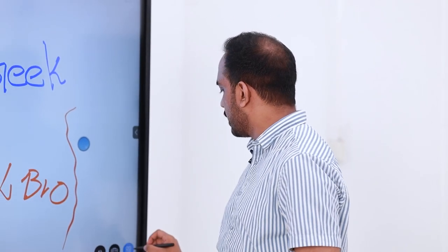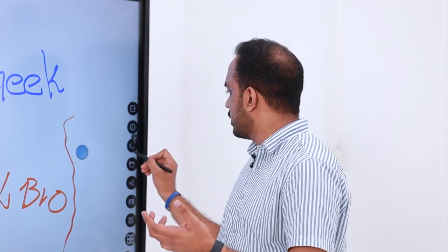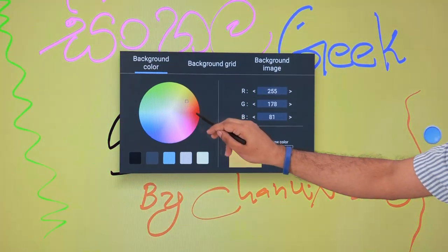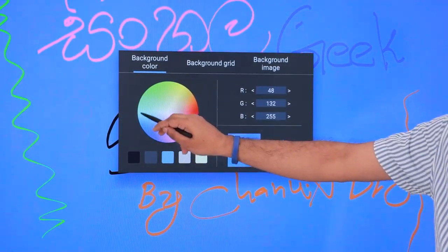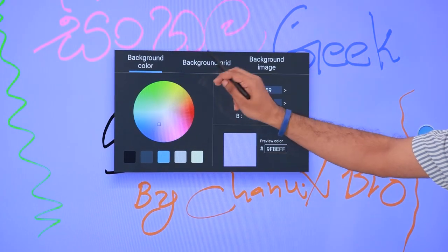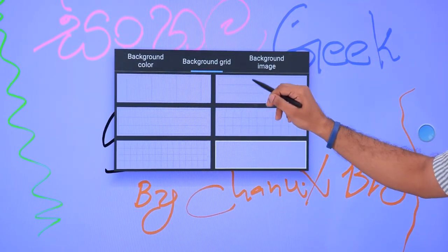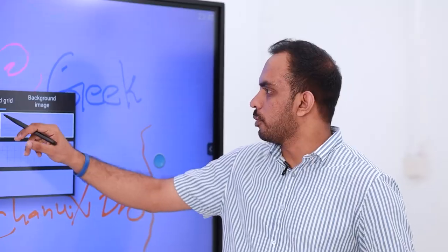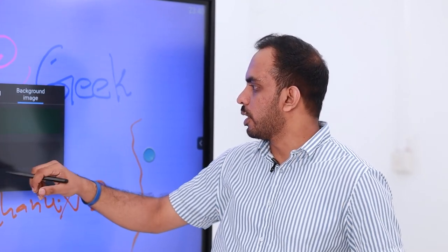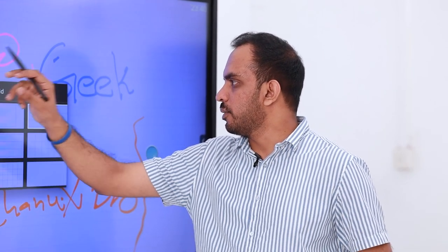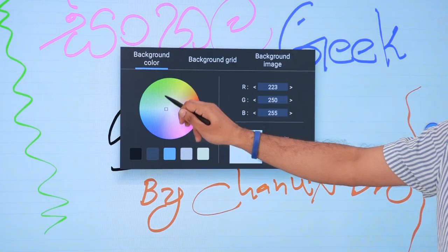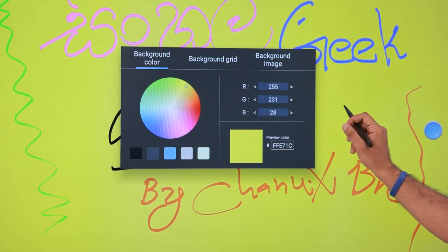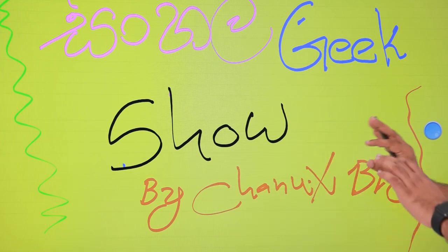You can use the same part — black or white. You can use the same color. You can use the same grid or use the same image like that. Then you can use the same part as other parts.